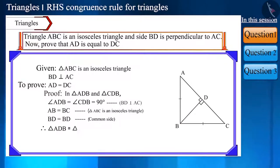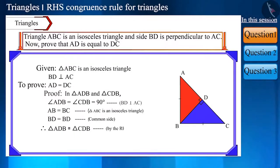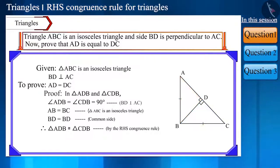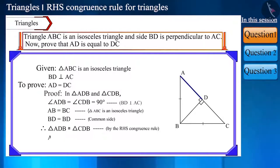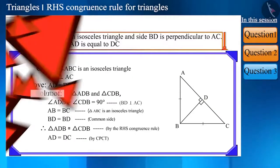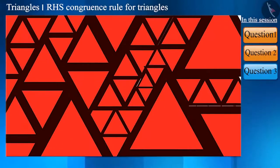Now we can say that these two triangles are congruent by the right angle hypotenuse side congruence rule. And the corresponding sides of the congruent triangles are equal. Therefore, side AD is equal to side CD, or side AD is equal to side DC. Let's see the next question.